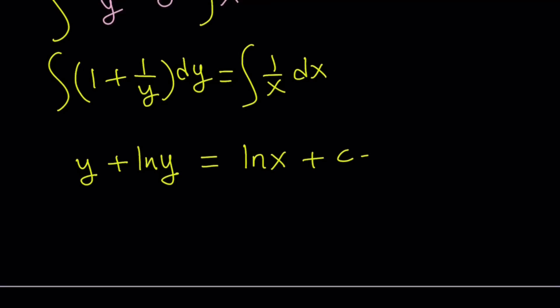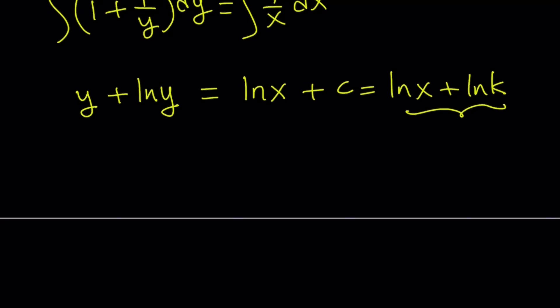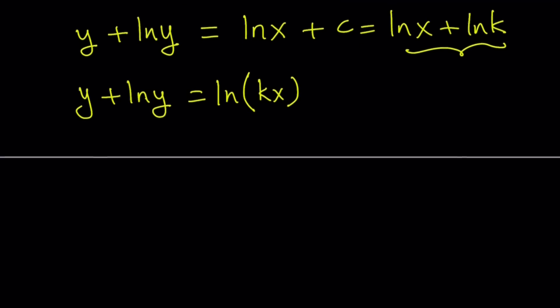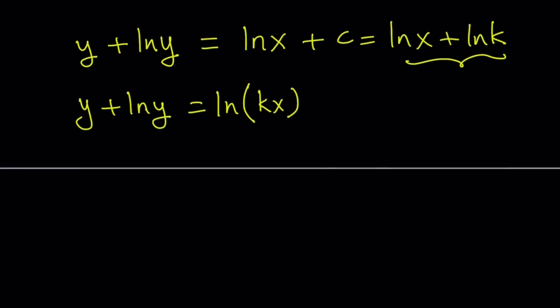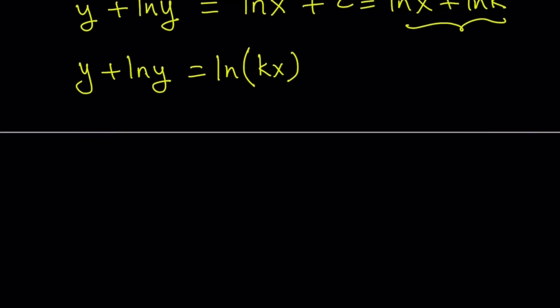First of all, I want to write the c as ln k, where k is a constant. c is a constant, too. Because now I can combine these two things into one log. By the way, this is the natural log of y. And so natural log of x plus natural log of k can be written as natural log of x times k or k times x. Again, k is a constant, so even if you use the absolute value symbol, it doesn't matter because k can be positive or negative. Of course, when x is positive, you want k to be positive as well.